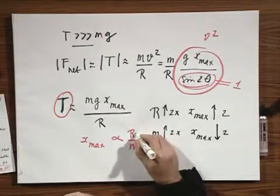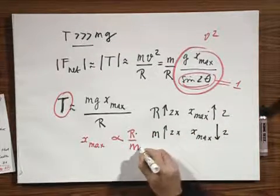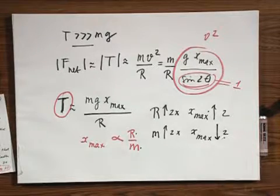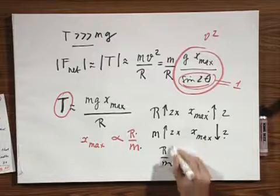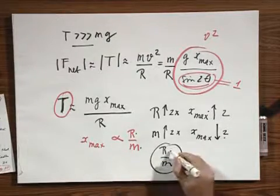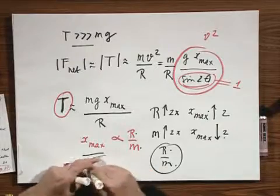So increasing R, larger R, larger X max. Larger M, smaller X max. And if you keep R over M constant, for instance, you make this one double and you make this one double, that will have no impact on X max.